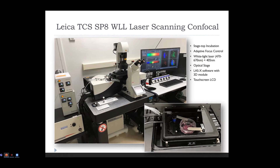The SP8 is a couple of years newer than the SP5 and has upgrades particularly useful for live cell work. Instead of a big box around it, we have a tiny stagetop incubator on the stage with a small dish inside. The dish receives 5% CO2 to keep the atmosphere at proper levels, water for humidity, and temperature is controlled on the surface and underneath. The objective is also heated, so we don't get much of a heat sink, which helps mitigate Z-drift.